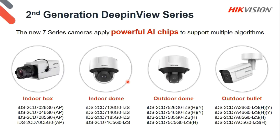Looking at the second generation Deep in View cameras — this is mainly our 7-series cameras. They've got extremely powerful AI chips running GPUs, processing graphics much better than your ordinary camera. We've got them from indoor box (which can be put in an outdoor housing), indoor domes, outdoor domes, and bullets — a big range. Looking at resolution: 2 megapixel, 4 megapixel, 8 megapixel, and 12 megapixel throughout the whole range, from quite low resolution up to 12 megapixel for project level installations.